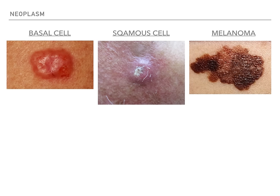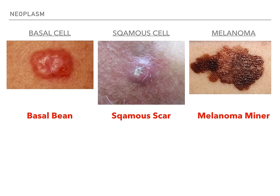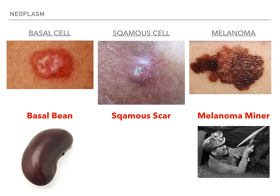The mnemonics for the neoplasm category: basal cell carcinoma — the basal bean, because it looks like a smooth bean. Squamous cell — the squamous scar, because it looks like a nasty scar. Melanoma — the melanoma miner. On boards they'll ask: what is the most important prognostic factor for melanoma? The answer is the depth of invasion. The deeper the melanoma goes into the skin, the worse the prognosis. The miner reminds us — the further down he digs, the more dangerous it is.